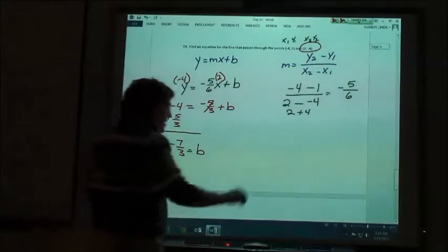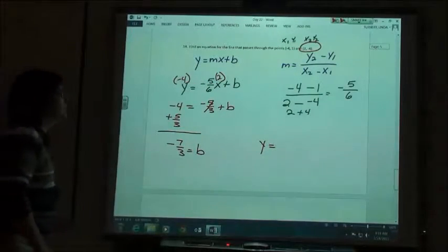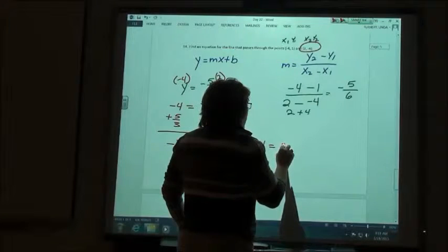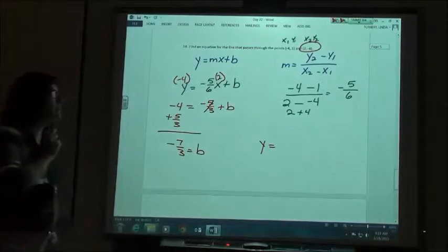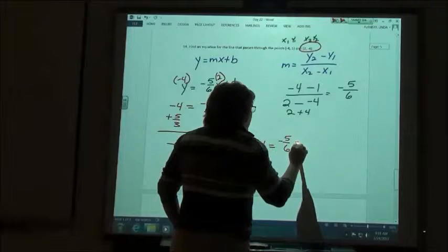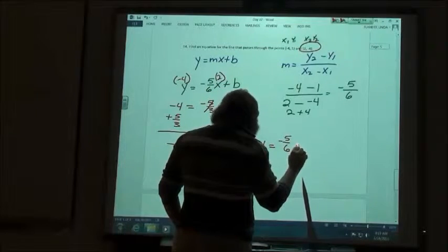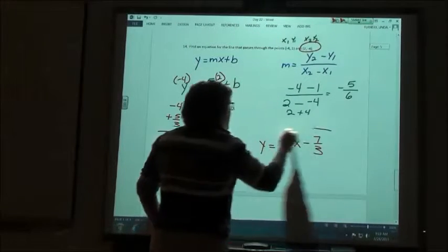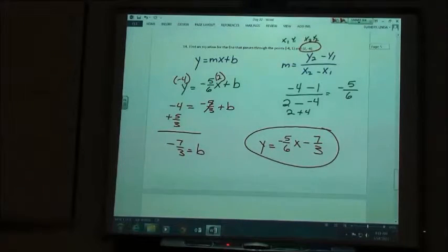Y equals negative 5 sixths x minus 7 thirds. Don't forget that X. There's my equation then.